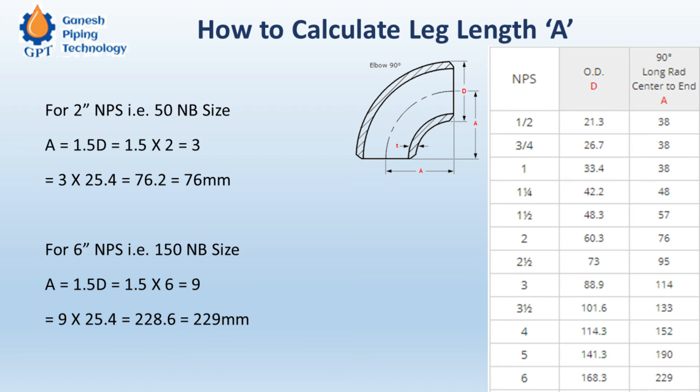For bends used in piping operations, the same formula A = 1.5 × D can be used as a base, but the multiplier can be 3×D, 5×D, or 6×D. For piping bends, the radius is generally greater than 1.5 times — it may be two, three, or five times the diameter. Let's move to the next slide to calculate the leg length and verify it against the chart.